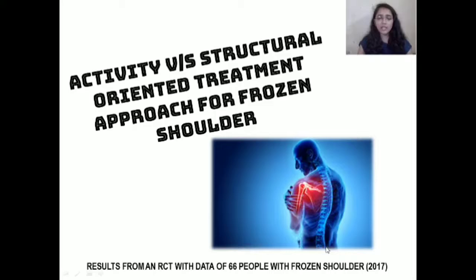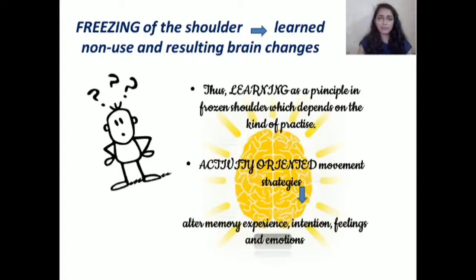Traditionally, frozen shoulder is known to have three stages, each with different variability of pain and stiffness. The stiffness is hypothesized to be similar to the learned non-use and resulting brain changes seen in stroke patients. Brain changes respond to learning, and learning is decided by the kind of practice employed in treatment. Thus, it was hypothesized that activity oriented movement strategies will prove effective in frozen shoulder, as these alter memory, experience, intention, feelings, and emotion.